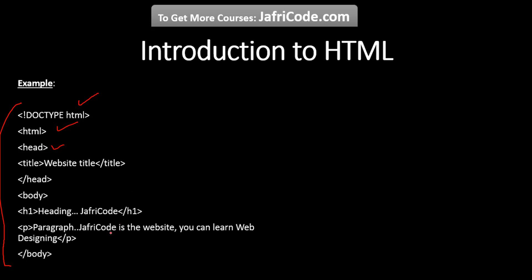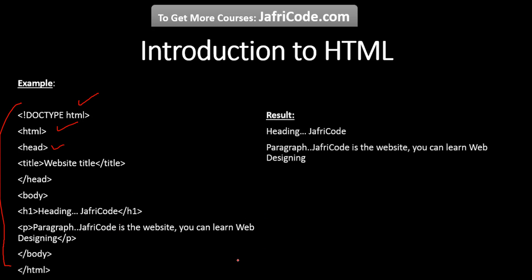When you execute this code you will get a result. When you write this type of code in the specific editor, you get this type of result — a heading and a paragraph. You can see the heading is coming from this line of code and the paragraph from this line of code. We are using h1 — h means heading — and p means paragraph. H1 will display as a large heading size and p will display as a paragraph. This is the basics of HTML — the source code written in HTML.